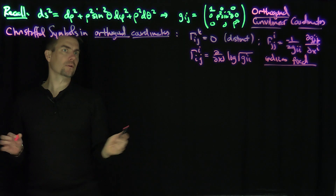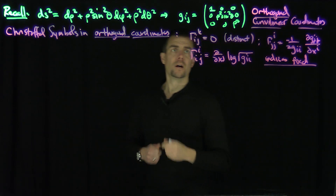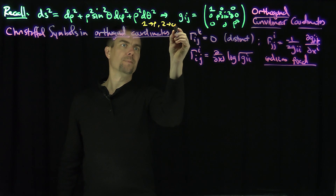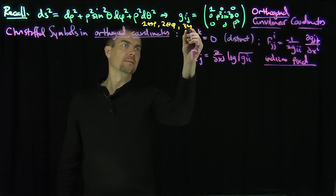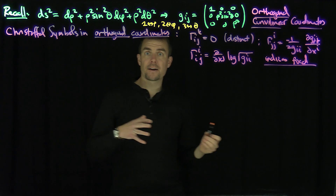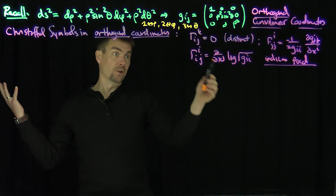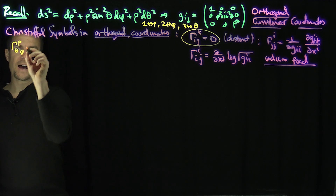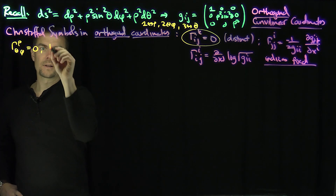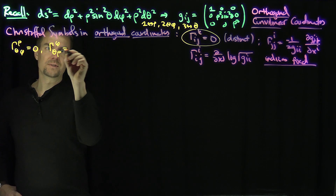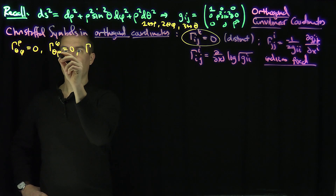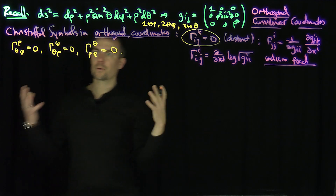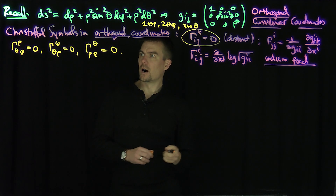These results are only true for orthogonal curvilinear coordinates. With our convention: coordinate 1 corresponds to ρ, coordinate 2 corresponds to φ, coordinate 3 corresponds to θ. For example, γ^(ρ,θ,φ) = 0 automatically by the first rule. Similarly, γ^(φ,θ,ρ) = 0, γ^(θ,ρ,φ) = 0. Those are trivial relationships for orthogonal curvilinear coordinates.